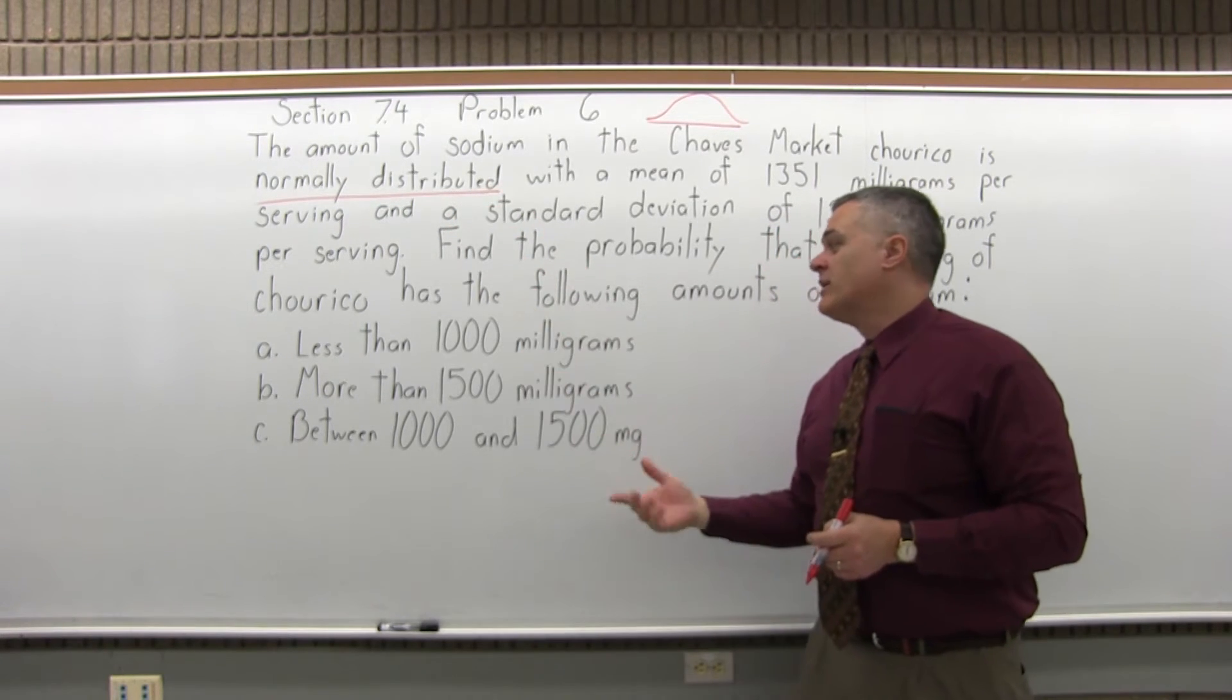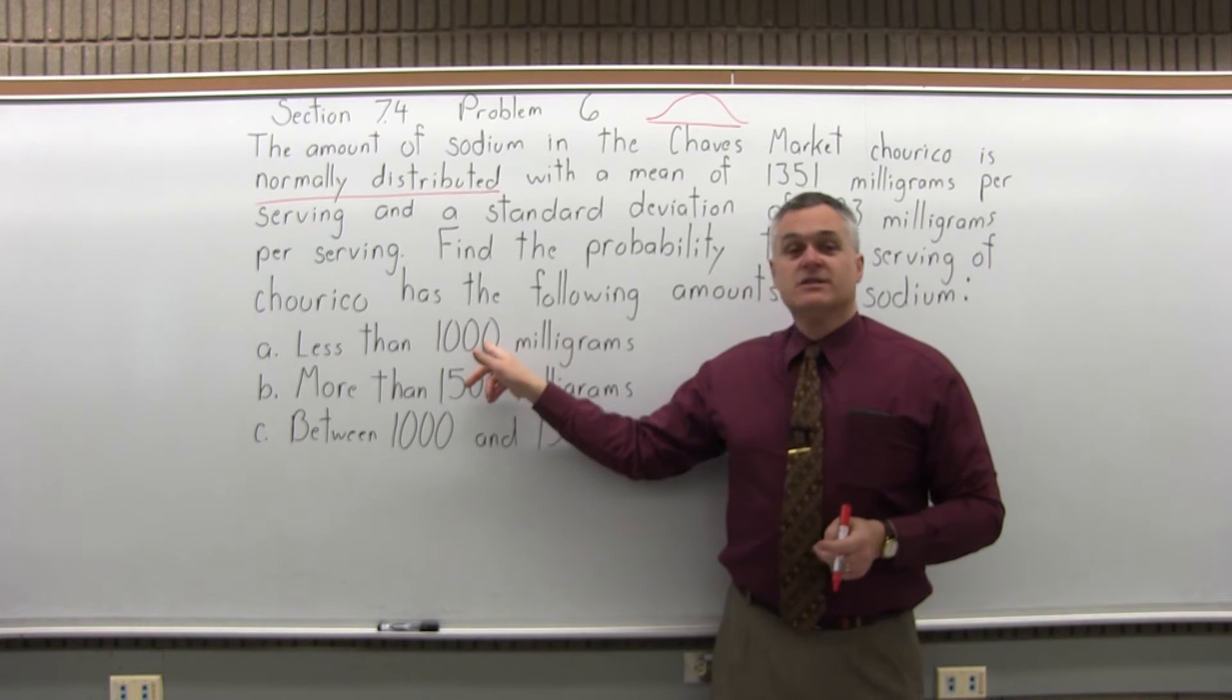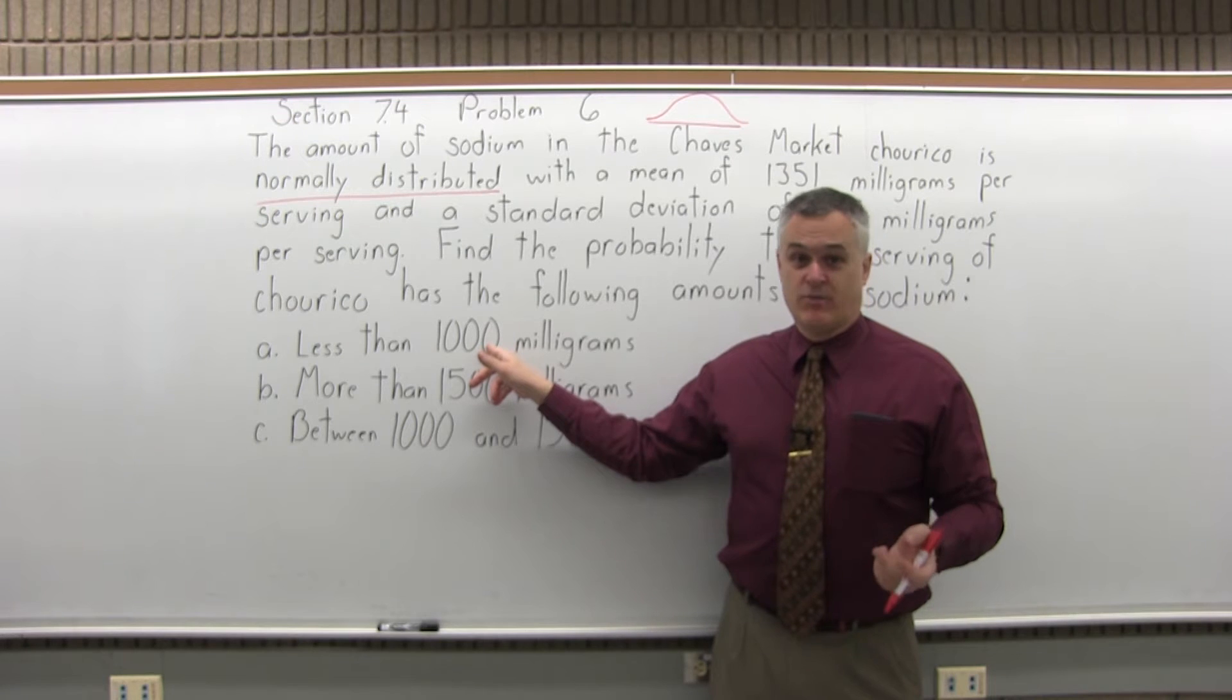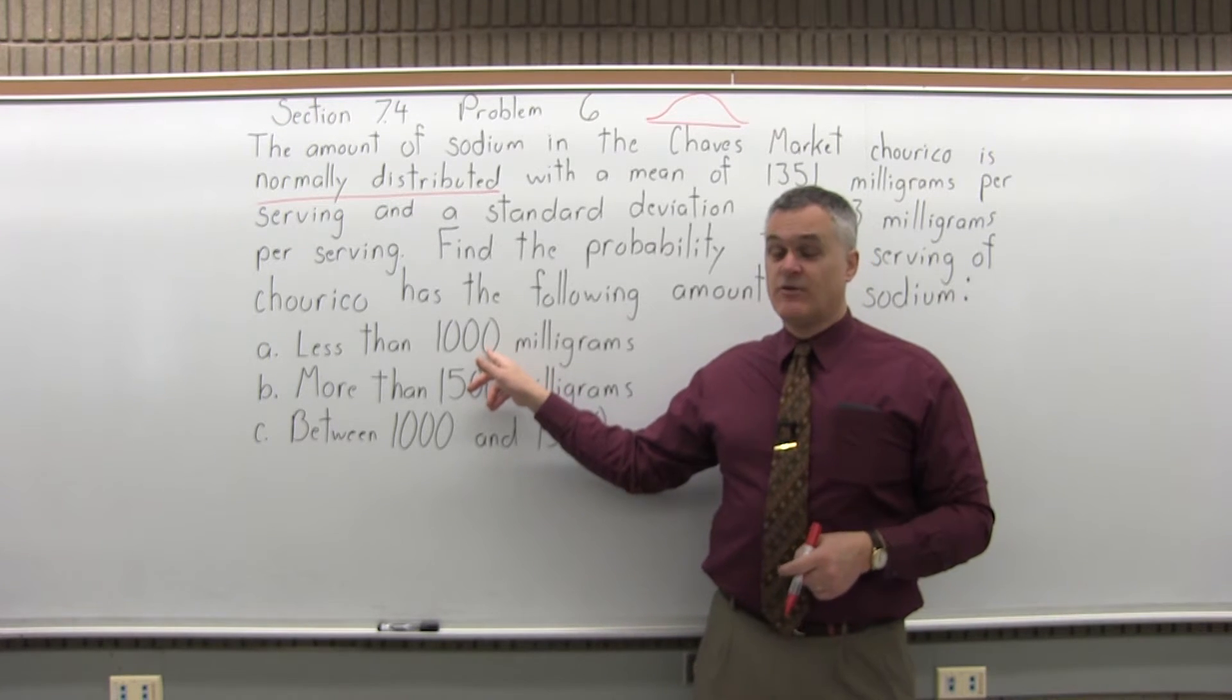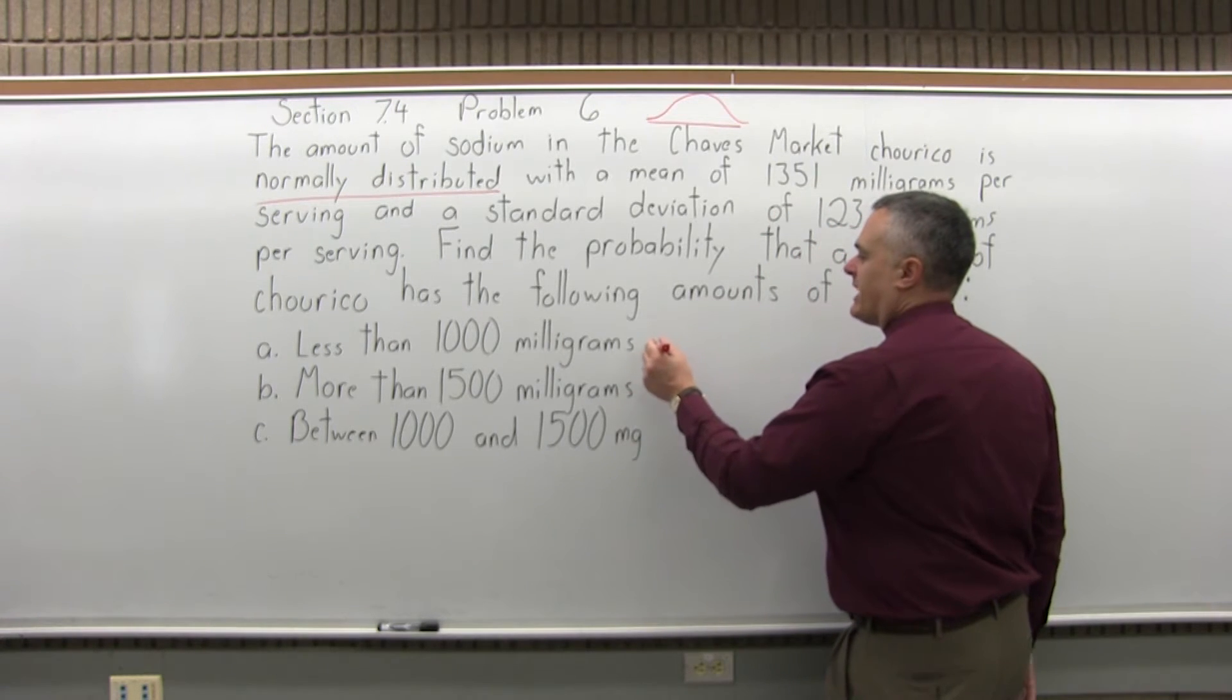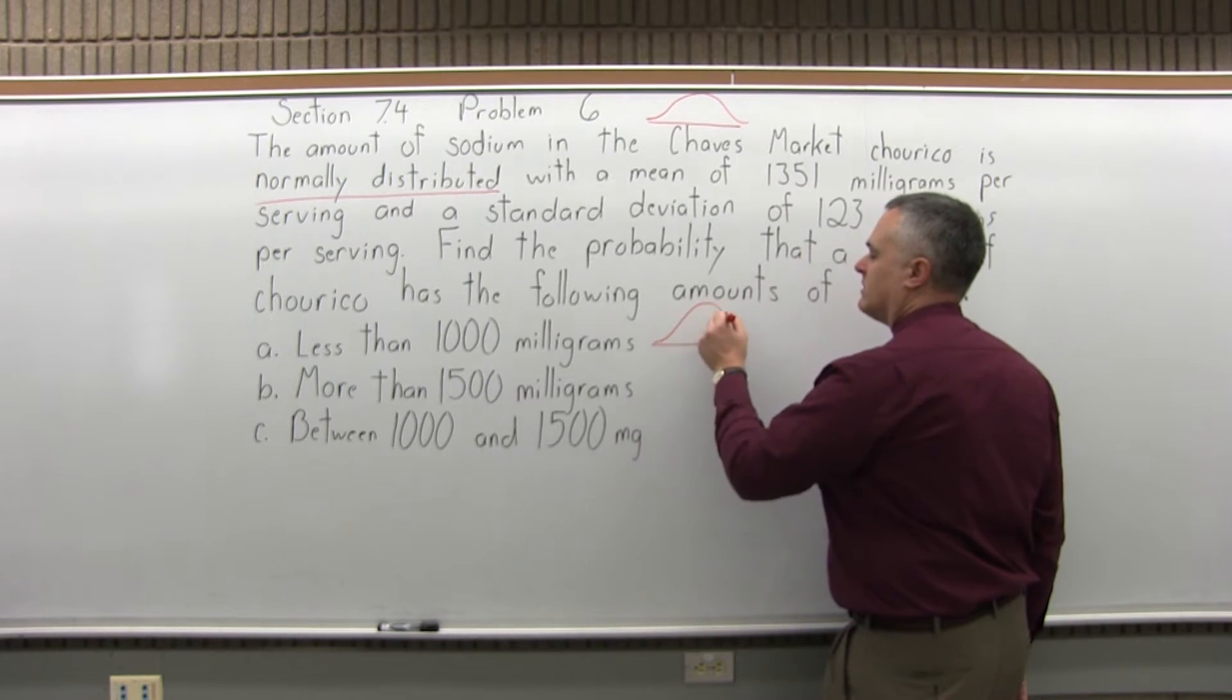For the first one, what I need to do is find the Z-score for 1,000 milligrams of sodium. I can't look up 1,000 milligrams the way it is, but I can find the Z-score for it and look that up.